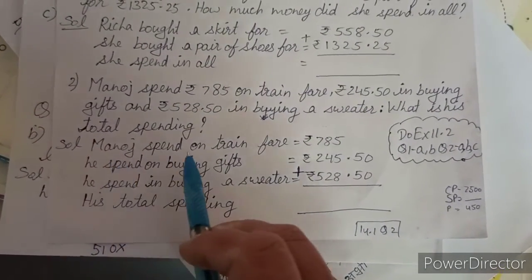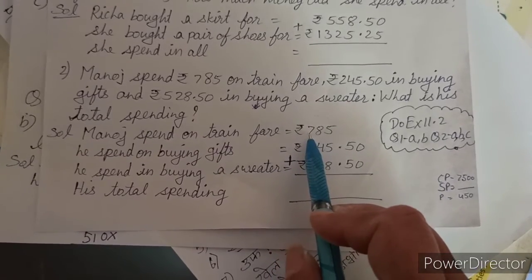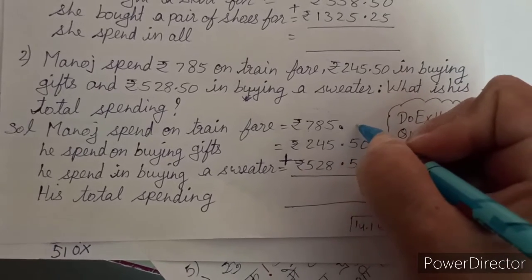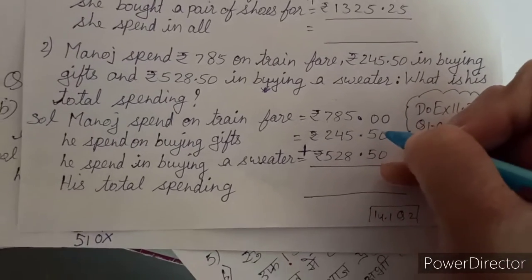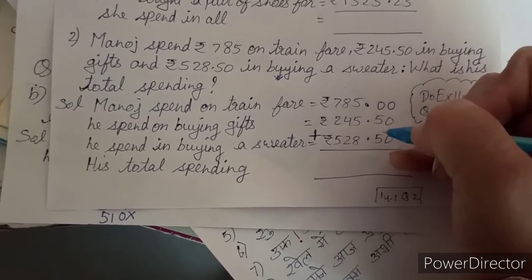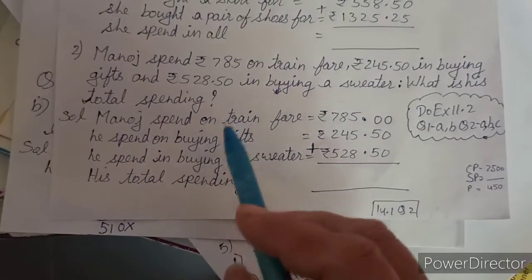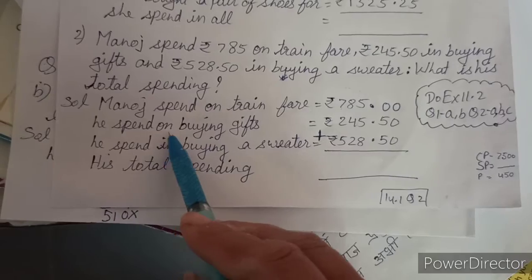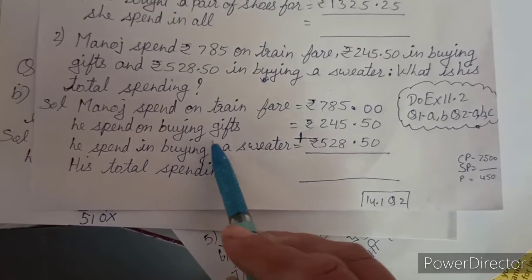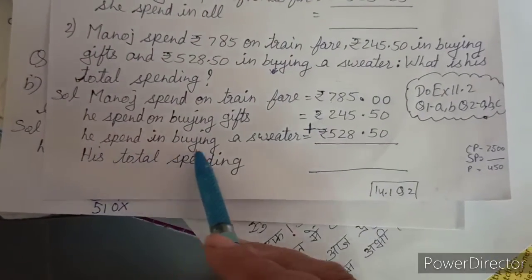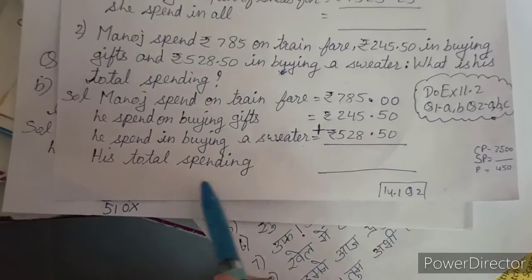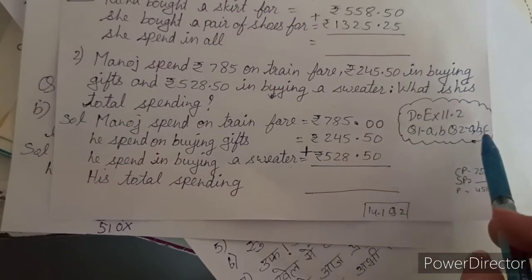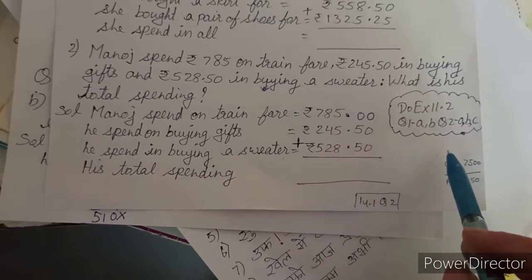The statement is easy: 'Manoj spends on train fare' — since no paise are given there, we write 785.00. Then we add all three. One statement covers everything: Manoj spends on train fare, on buying gifts, on buying a sweater — total spending is the answer. These addition and subtraction questions you will do on your own. Thank you, students.